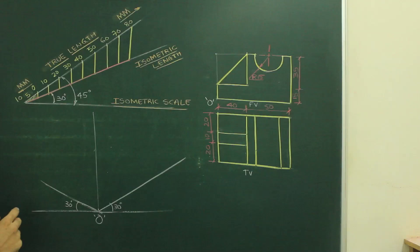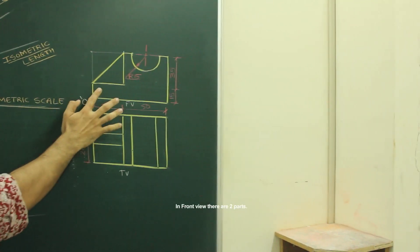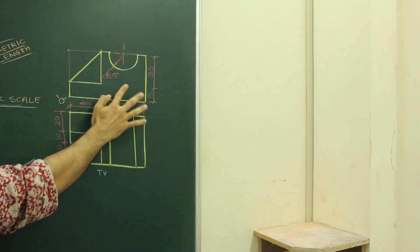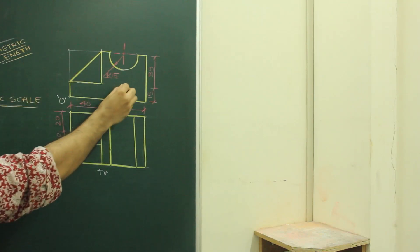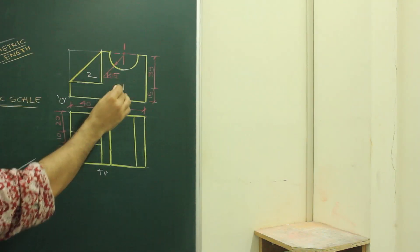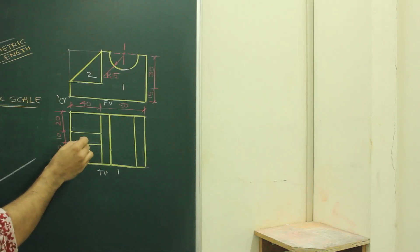Now, we will start with this. If you see in front view, there are two parts, part 1 and part 2. So which one is nearer to you? Part 1, right? Part 2 is in between. So first we will draw part 1.